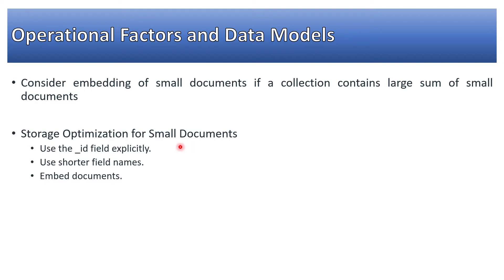For storage optimization for small documents, most of the time developers use the auto-generated ObjectId. In the case of users, we can store user email or phone number as the unique identifier. For products, we can have a unique attribute such as a SKU or some other field that differentiates the different products.